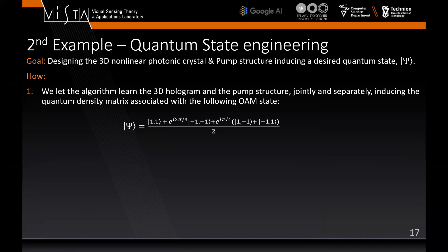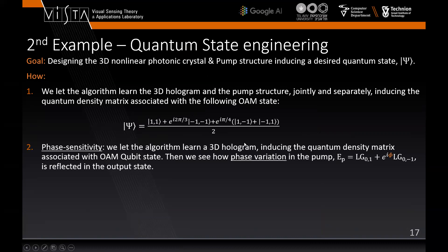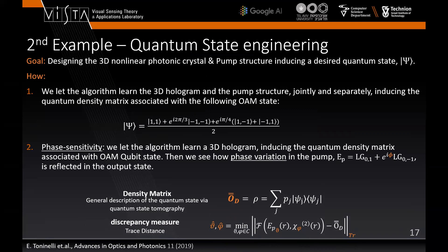Our next example is quantum state engineering. First, we let the algorithm learn the 3D hologram and the pump structure jointly and separately, inducing the quantum density matrix associated with the desired orbital angular momentum state. Then we demonstrate the phase sensitivity of our algorithm by learning the parameters inducing the quantum density matrix associated with the qubit. And then we see how phase variation in the pump are reflected at the output state. The density matrix is calculated through sequence of projective measurements of second-order correlations in quantum states and quantum state tomography, and the discrepancy measure is taken naturally to be the trace distance.